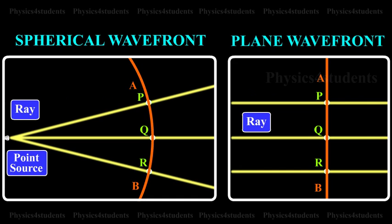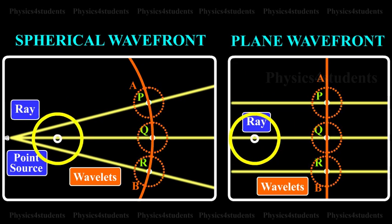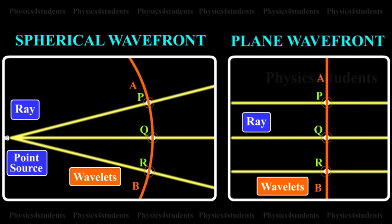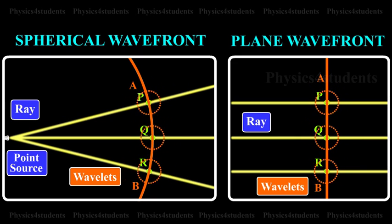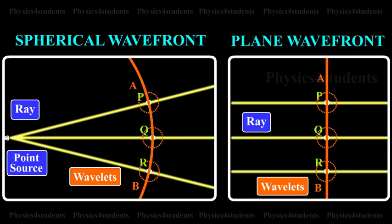every point on AB acts as a source of secondary wavelets which travel with the speed of light C. To find the position of the wavefront after time T, circles are drawn with points P, Q, R, etc. as centers on AB and radii equal to CT. These are the traces of secondary wavelets.